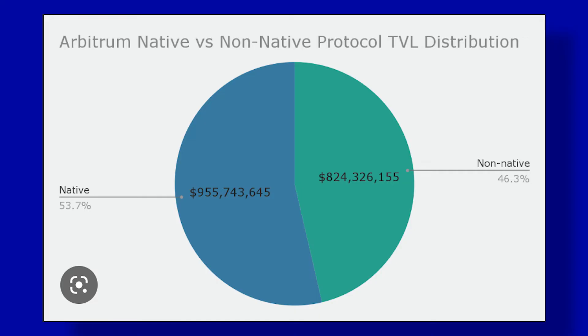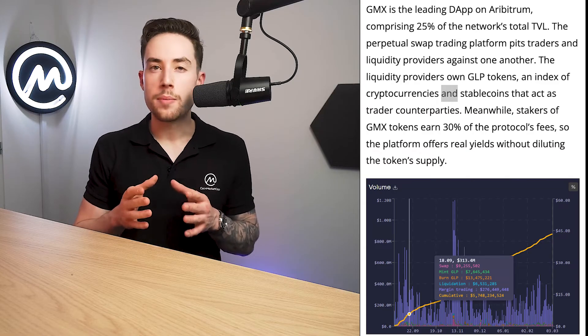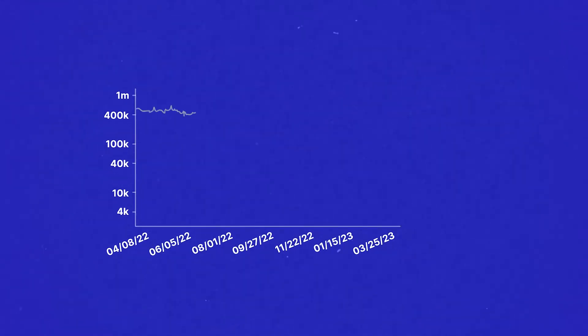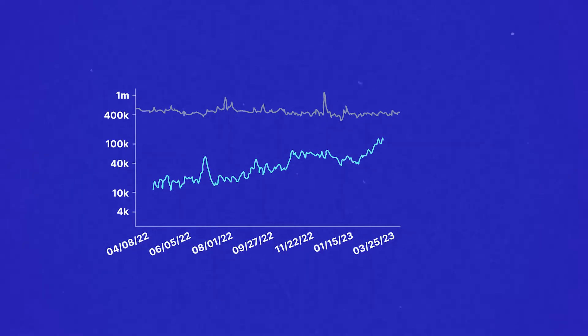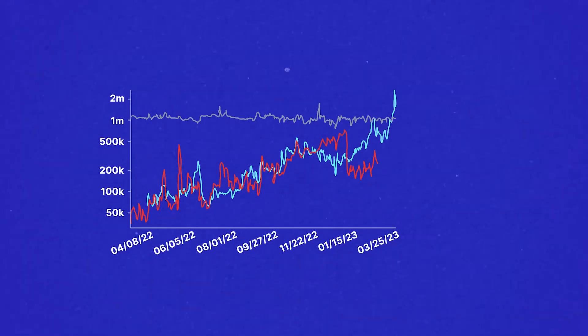Another interesting detail is the comparison of native versus non-native protocols for TVL. 54% of Arbitrum's TVL came from native protocols, but only 29% of Optimism's. The reason for that is the dominance of GMX on Arbitrum — GMX alone accounts for almost 25% of all the TVL on Arbitrum. Arbitrum also leads in terms of daily active addresses and daily transactions, and its airdrop only accentuated this lead. As of this time, Arbitrum is processing more daily transactions than Ethereum while also having more daily active addresses.